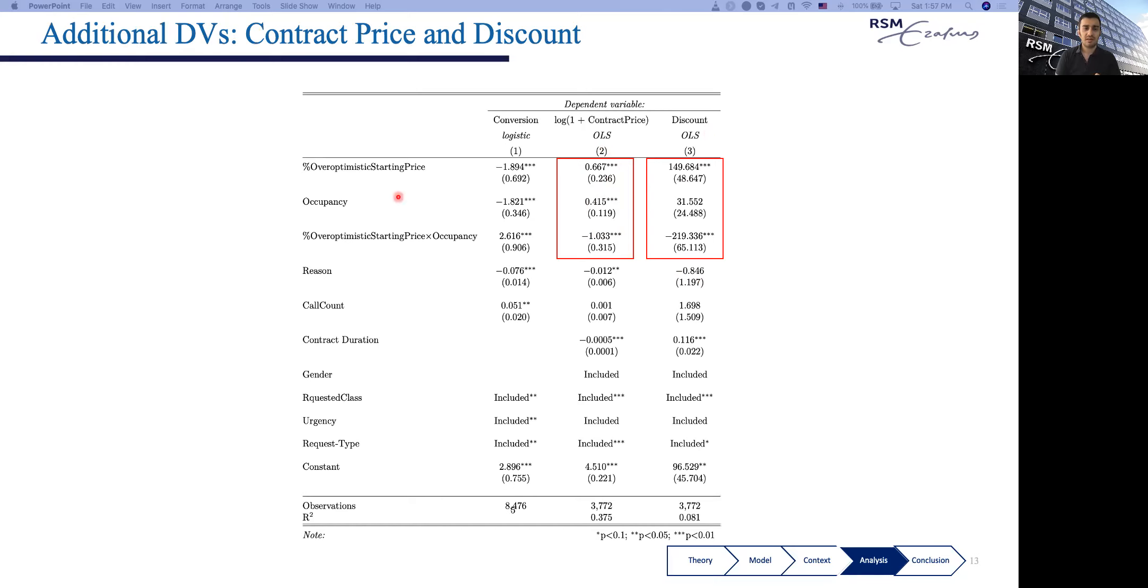As for discounts, when prices are overoptimistic, they tend to ask for more discounts. Again, the same interaction effect is significant. But this effect is only positive on the discount when occupancy is low. When it's high, there is no such effect.